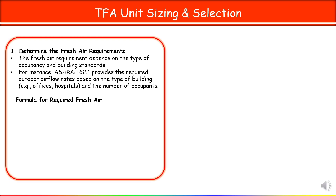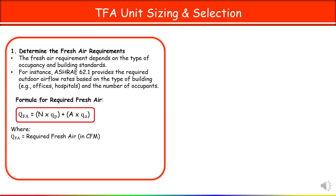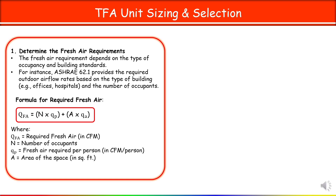Here you can see the formula given to find out the required fresh air. In this formula, QFA is the required fresh air in cubic feet per minute. Capital N is the number of occupants. QP is the fresh air required per person in CFM per person. Capital A is the area of space in square feet. QA is fresh air required per unit area in CFM per square feet. In short, fresh air CFM equals CFM per person times number of people, plus CFM per square feet times area.